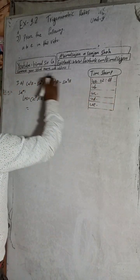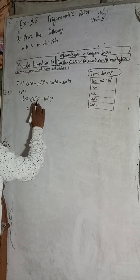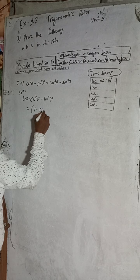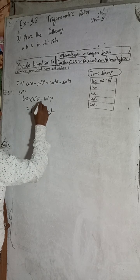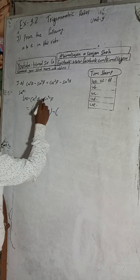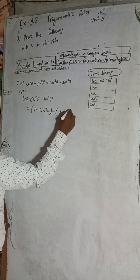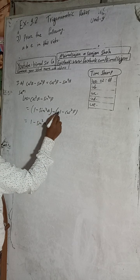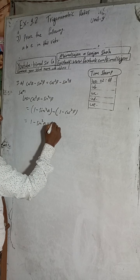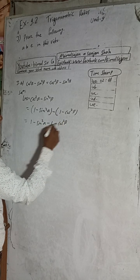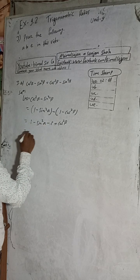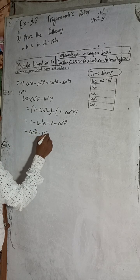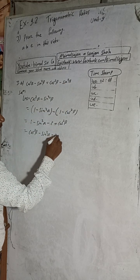For question 3a, I have taken the LHS part: cos²α − sin²β. Now cos²α can be written as (1 − sin²α), so write minus and use a bracket. sin²β equals (1 − cos²β). Opening the bracket: 1 − sin²α − 1 + cos²β. The 1 and −1 cancel, giving cos²β − sin²α, which is the RHS. Proved.